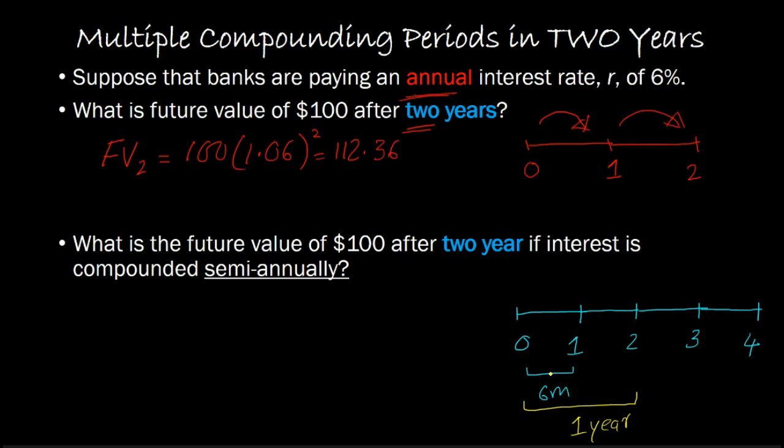So that's how we're going out two years into the future. And so here, every six months we are earning 3%. And so in this case, if you wanted to find out the future value two years into the future, you can say it's 100 times 1 plus 0.06 divided by 2. So this is 3%. And then you raise to the power 4 because in two years, there are four six-month intervals.